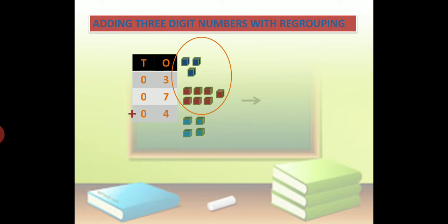10 ones equals 1 ten. You can see here, so we put 1 on the tens place. Now remain 4. So 10 plus 4 equals 14, so we put 4 on the ones place.